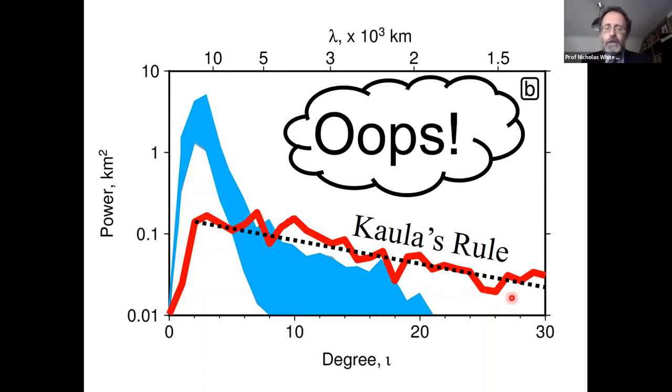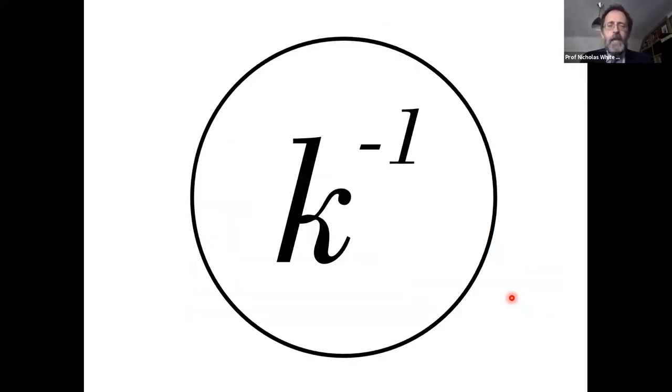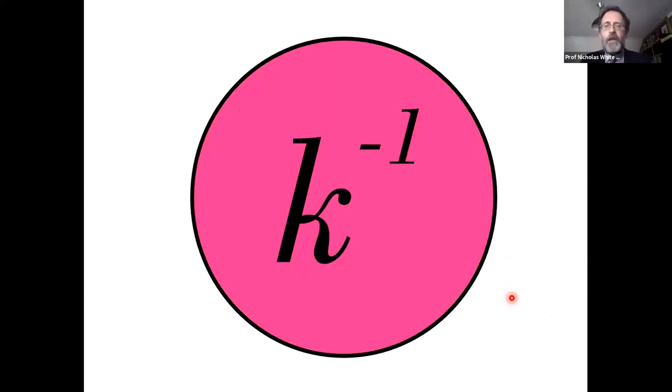Critically, the red observed spectrum for dynamic topography is very different to the predicted models shown in blue. It's very different at degree 2 and at higher degrees. There's a fundamental mismatch between what the predictions say and what the observations say. That's still something the dynamic topographic community is trying to thrash out.